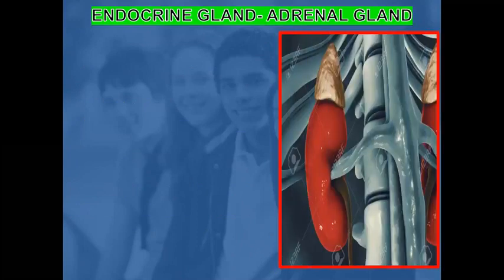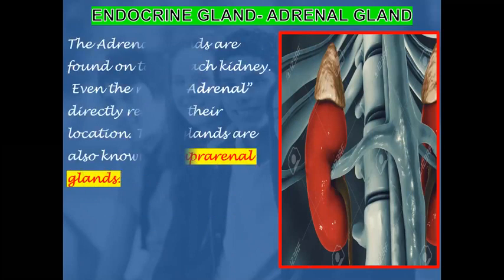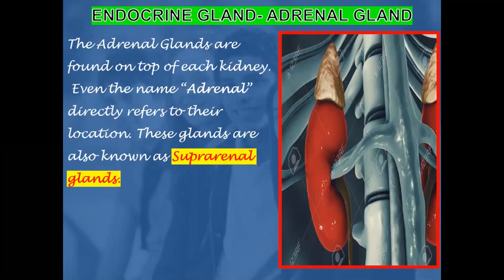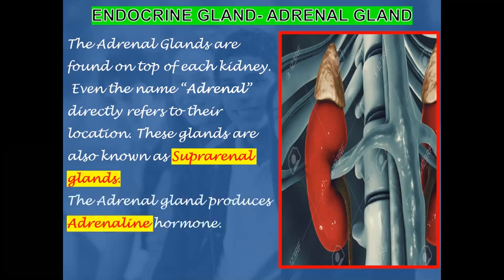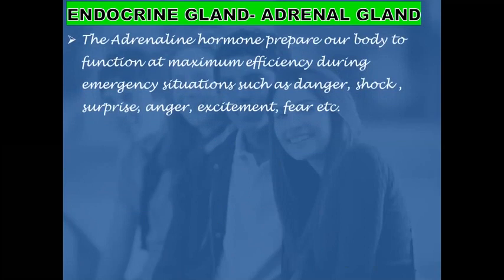The adrenal glands are found on the top of each kidney. Even the name adrenal directly refers to their location. These glands are also known as suprarenal glands. The adrenal gland produces a hormone named adrenalin. The adrenalin hormone prepares our body to function at maximum efficiency during emergency situations such as danger, shock, surprise, anger, excitement, and fear.